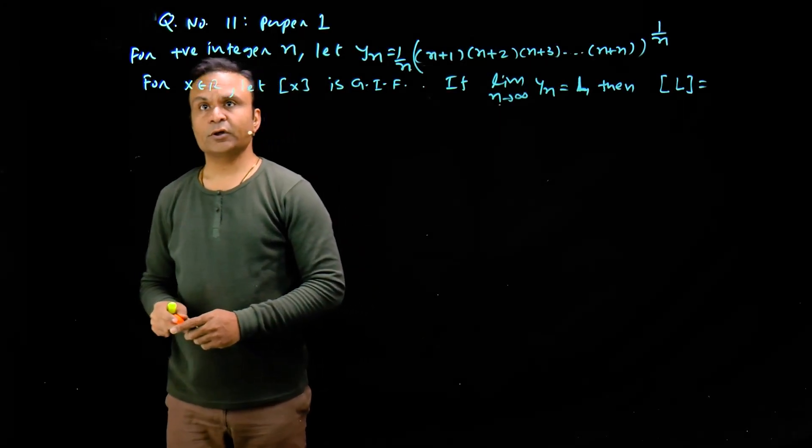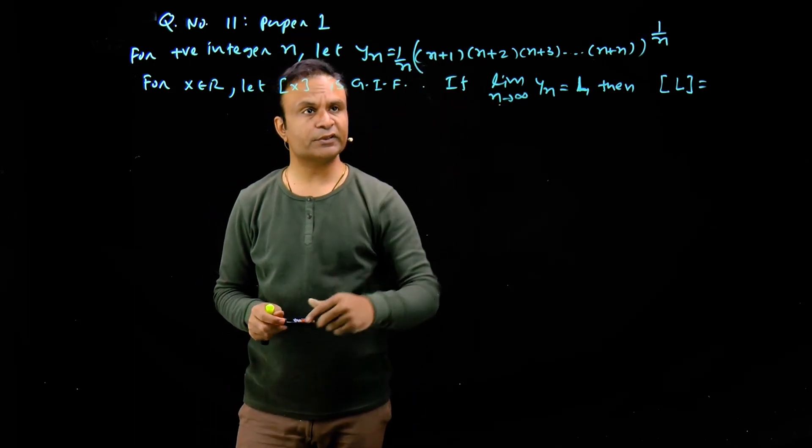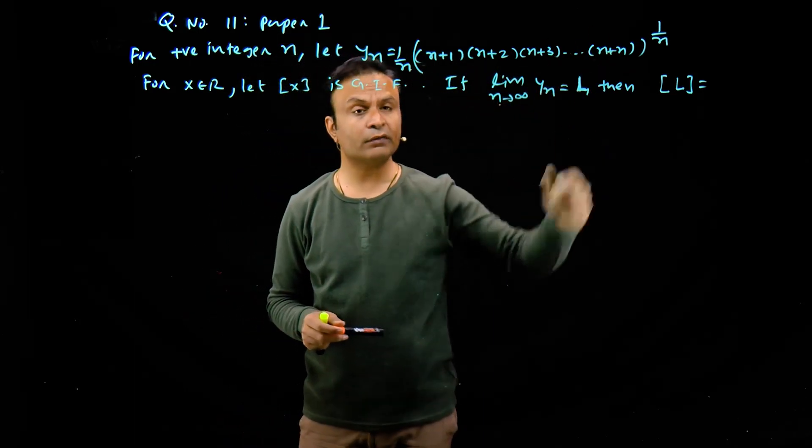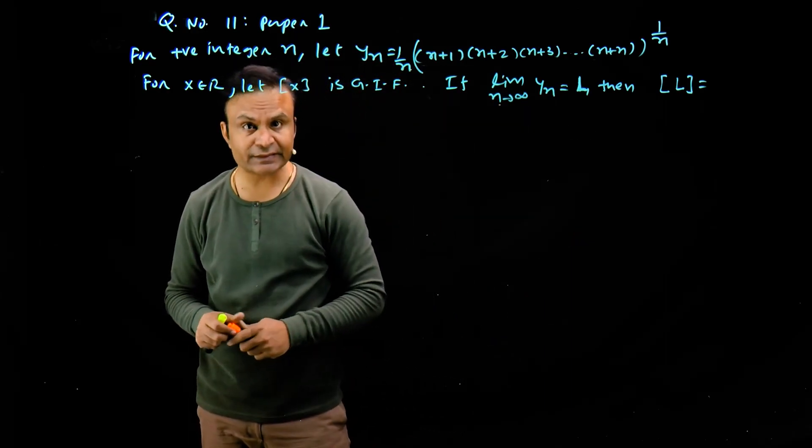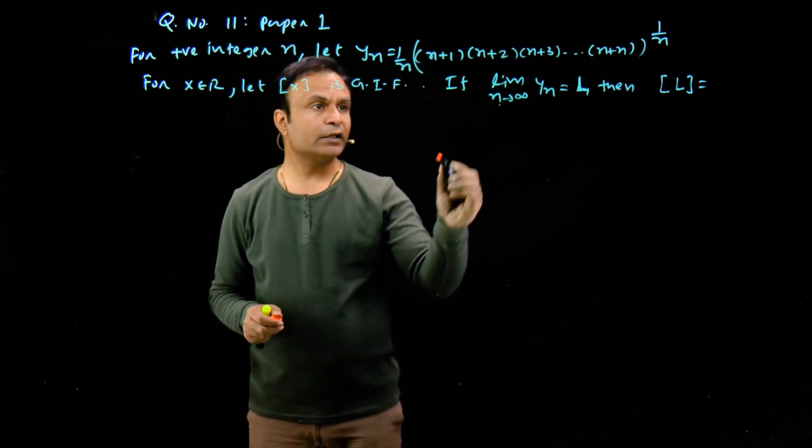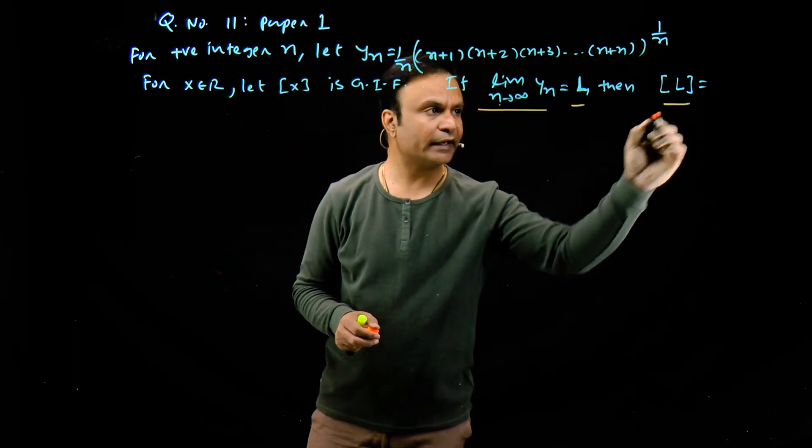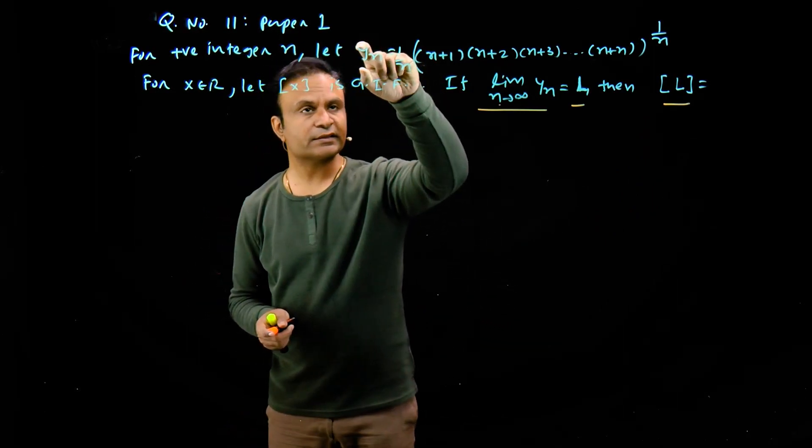Question number 11 of Paper 1: For positive integer n, let yn equal this expression, 1 upon n multiply by (n+1)(n+2) up to (n+n) whole power 1 upon n. For x belongs to R, this square bracket represents greatest integer function. And if limit n tends to infinity of yn is equal to l, then we have to find integral value of l. Basically we have to find the limit n tends to infinity.